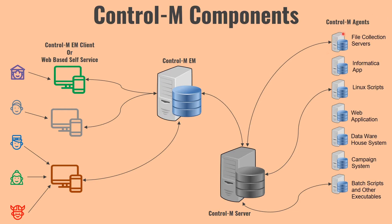Control-M Agents are installed on all the machines where you have Control-M applications. These agents are installed on application servers — servers where applications are running. That application can be any web-based application or any application with scripts. Examples include file collection servers, Informatica, Linux scripts, web application servers, Teradata, complex data warehouse applications, Hadoop, campaign systems, and other servers running batch scripts.